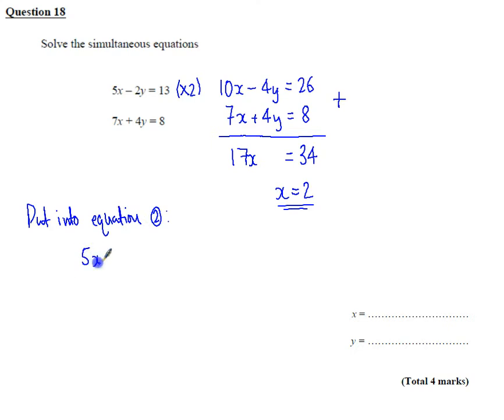So instead of 5x minus 2y equals 13, I'm going to go 5, I know my answer for x, so really that's 10 minus 2y. Oh, that doesn't make any sense. I've not put it into equation number 2, I've put it into equation number 1. My apologies. I went and said I was going to do equation 2, and then actually I went and did equation 1 instead. So if you put it into equation 1, I've written out equation 1, and then I've just replaced the x with 2, so that's 10 minus 2y is 13.